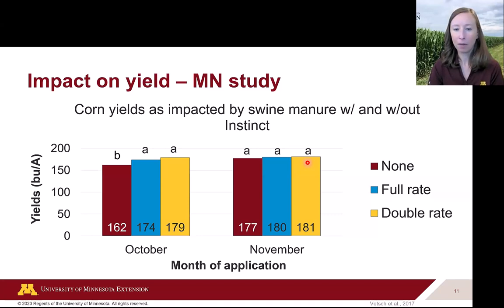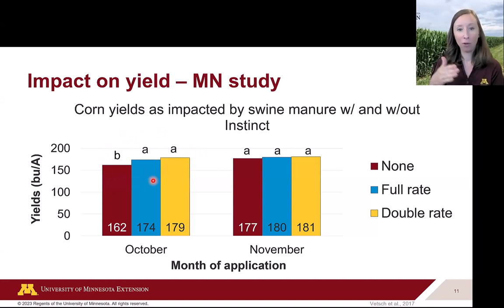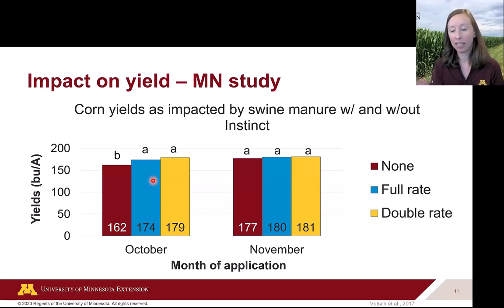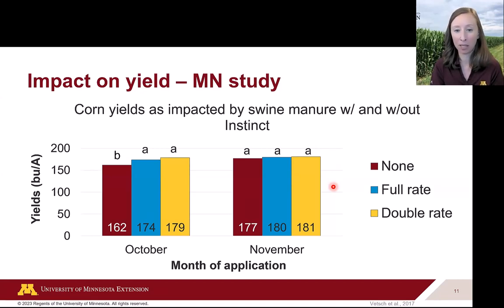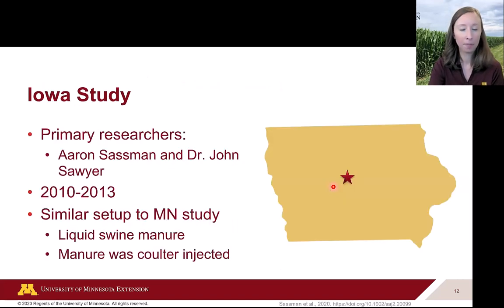Basically, if you're using a nitrification inhibitor like Instinct in October — a few weeks before soil temperatures get cool — this might be worth it, but any yield increase would have to offset the cost of the Instinct. If you're using it in November when soil temperatures are already cool, you may not be getting the bang for your buck, since the cost of the nitrification inhibitor was not worth the very minimal increase in yield that was seen.